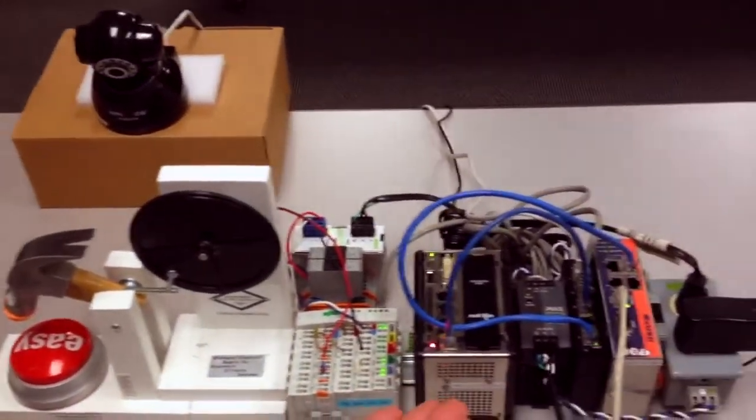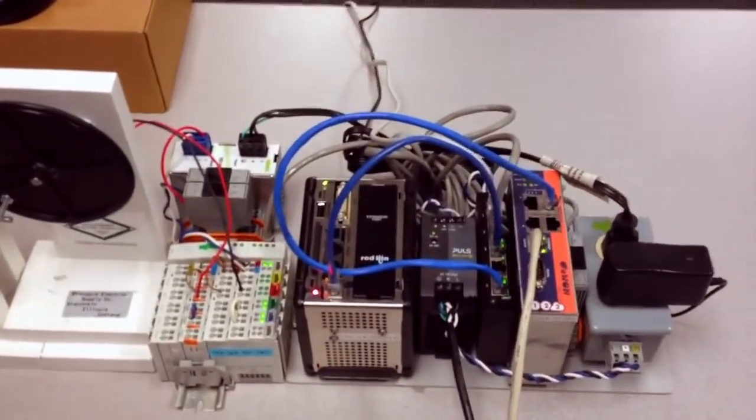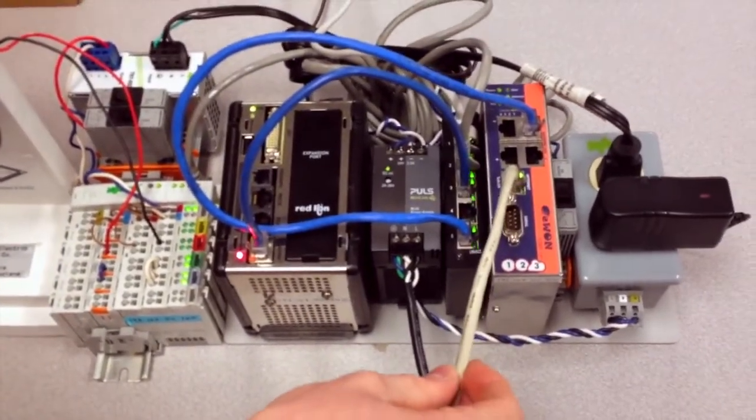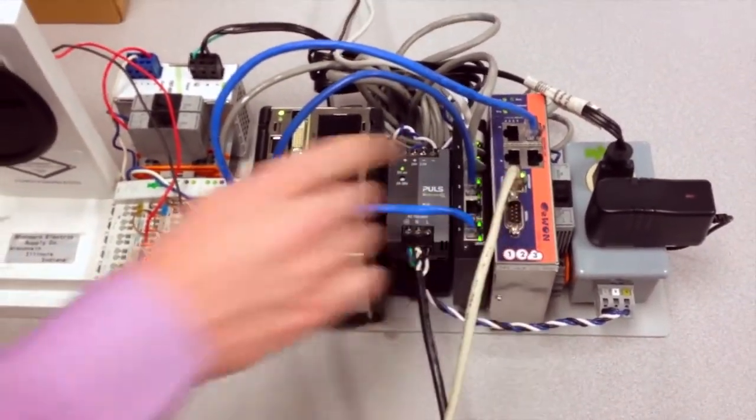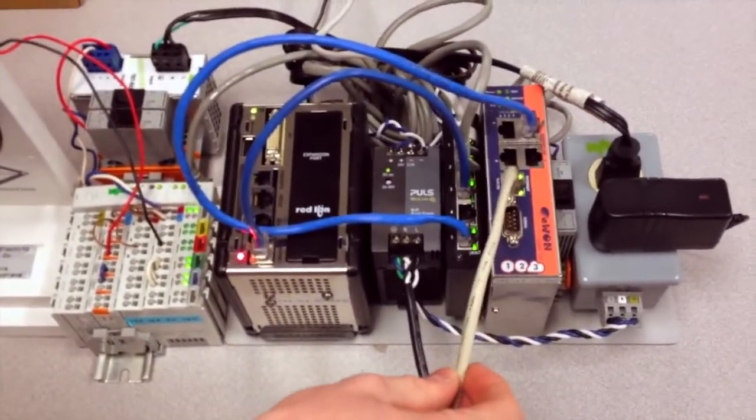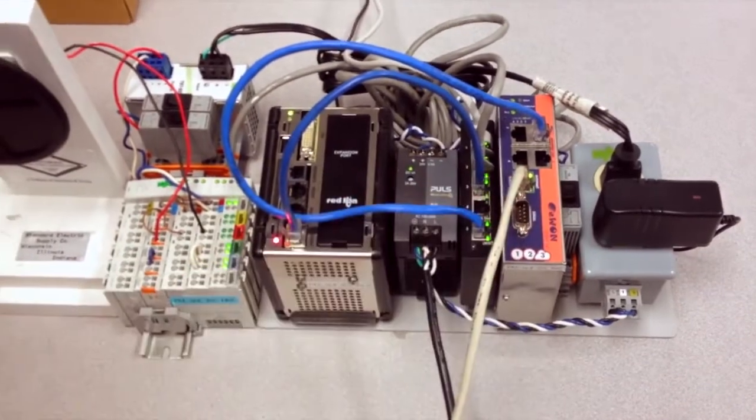To the far right here we have the EWON Cozy 141. The EWON module provides remote connectivity using a VPN connection which is secure. There's a firewall built in using the Talk2M cloud service.